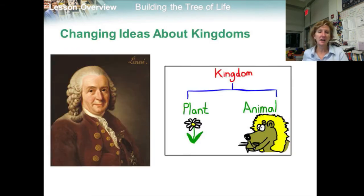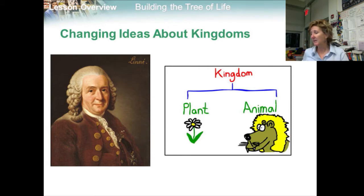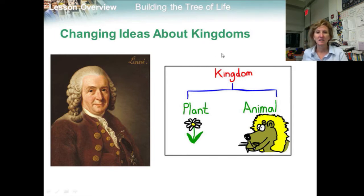During Linnaeus' time, living things were classified as either animals or as plants. Animals were organisms that moved from place to place and used food for energy. Plants were green organisms that generally did not move and got their energy from the sun.